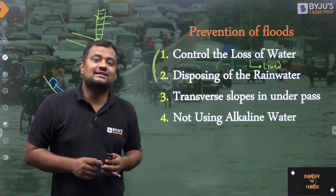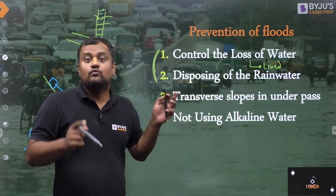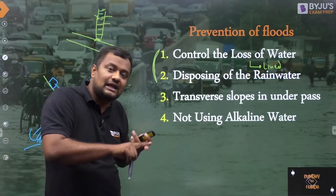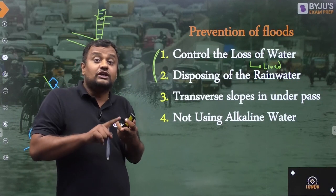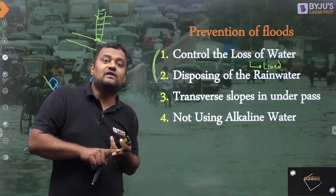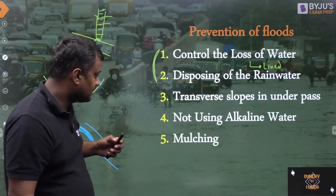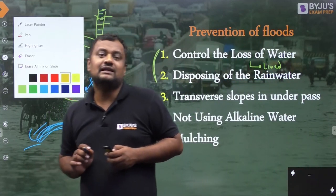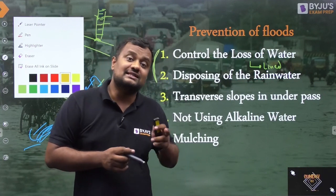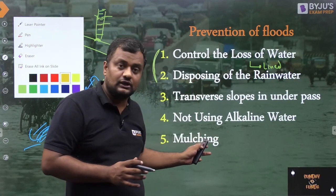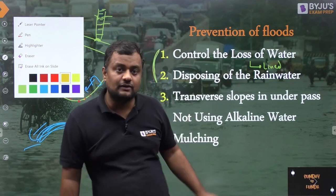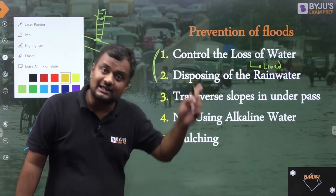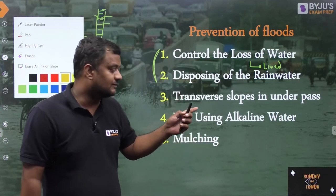Another measure is not using high alkaline water in irrigation. Alkaline water affects the soil and restricts its seepage capacity — it reduces the suction capacity of soil, so infiltration reduces, runoff increases, and eventually there is waterlogging. Second is mulching — using certain organic fertilizers or organic compounds such that even if the crop is waterlogged, the growth of the plant is not affected because mulching helps the crop grow even in waterlogging conditions.